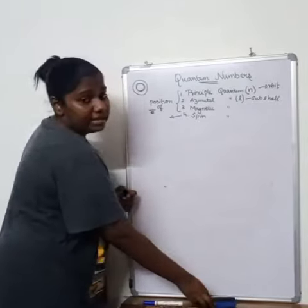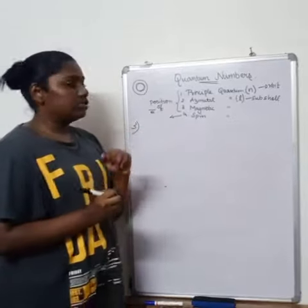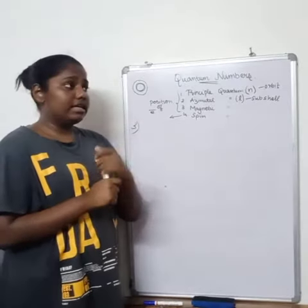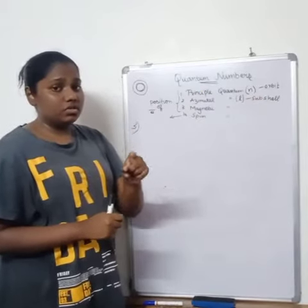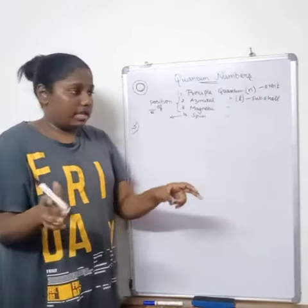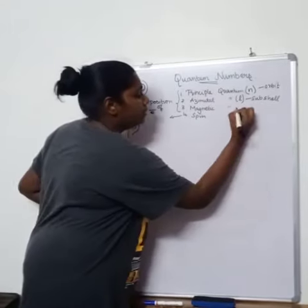So, now we are moving on to the magnetic quantum number. What is magnetic quantum number? In an electron, if a magnetic field is passed through it, this subshell orients into different parts. This is what we call the orbitals.